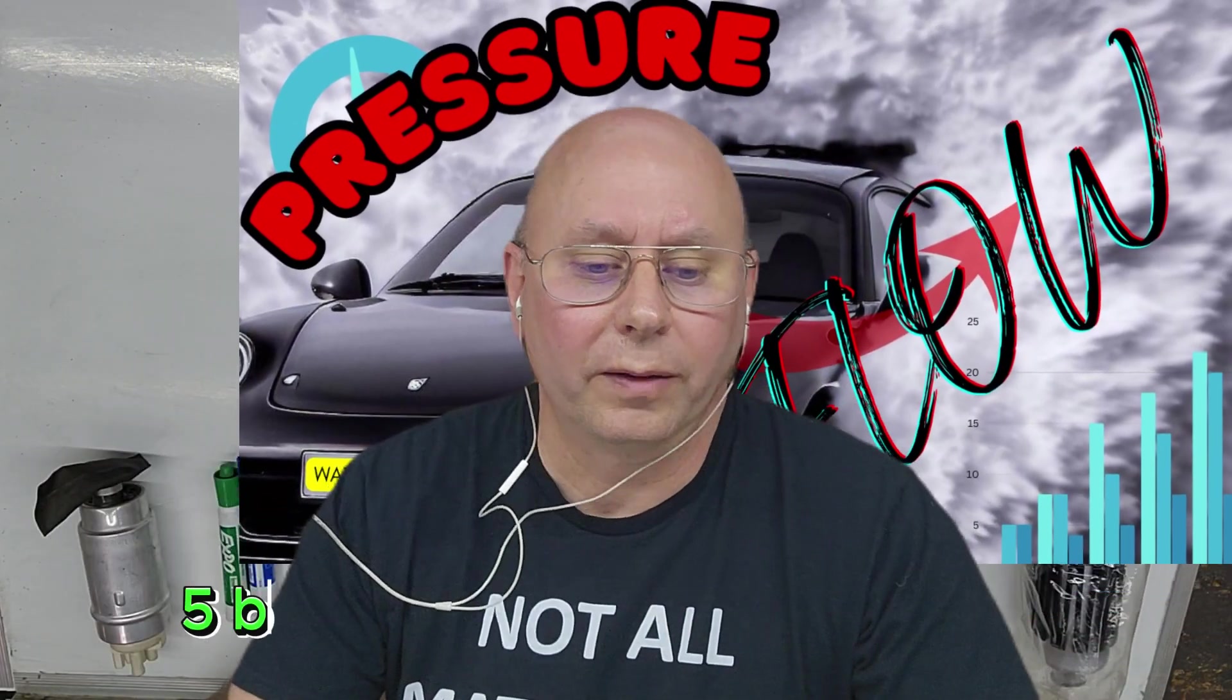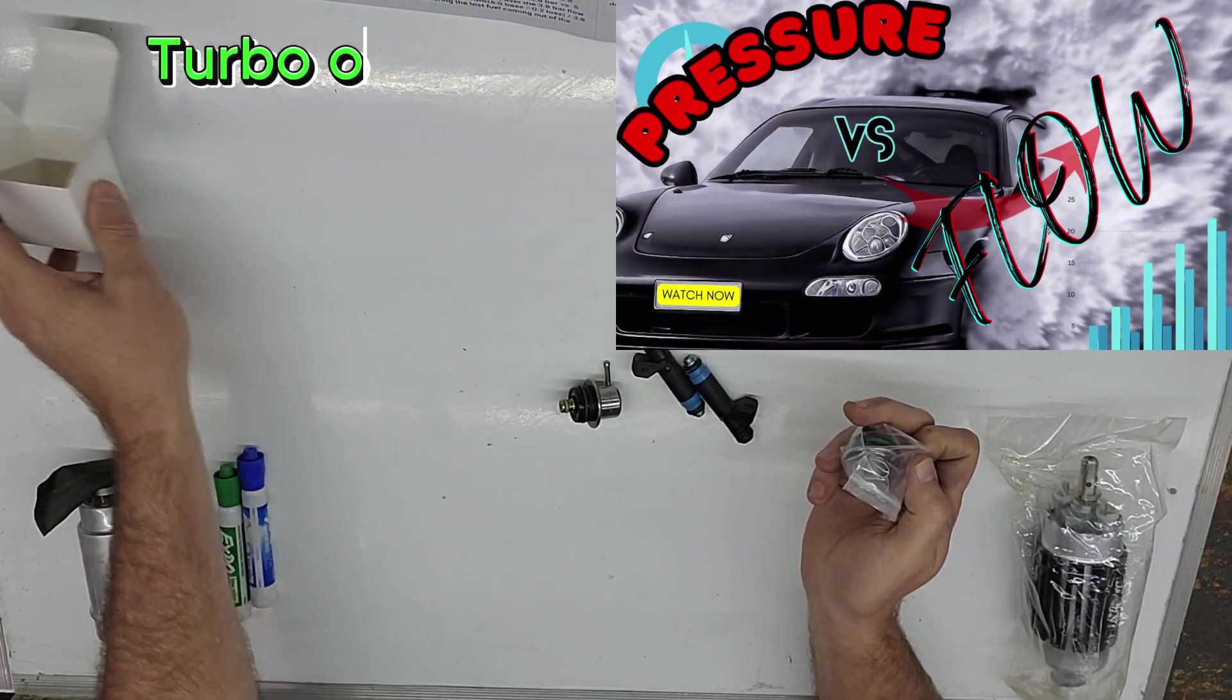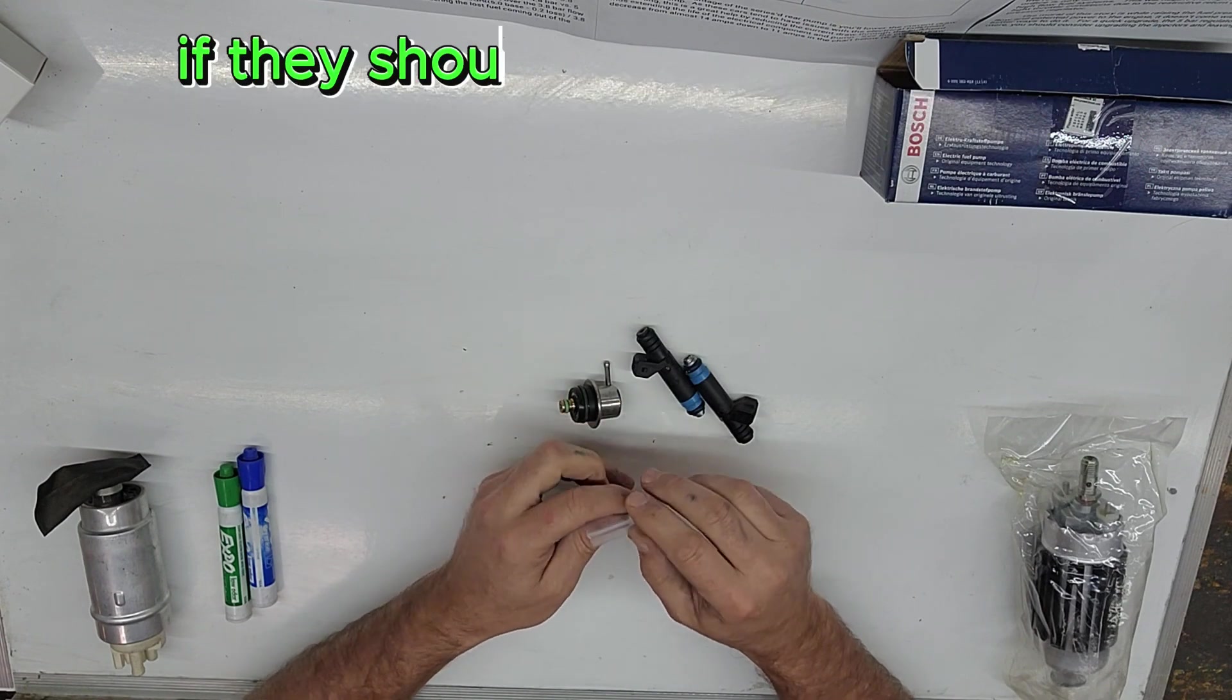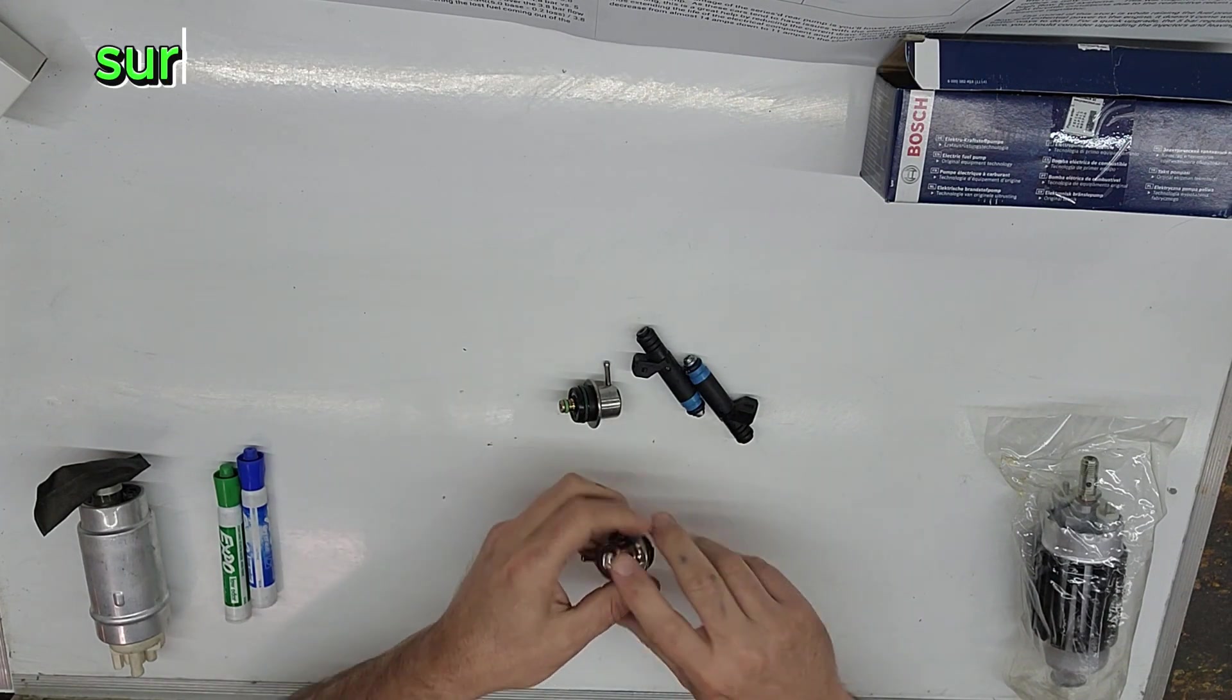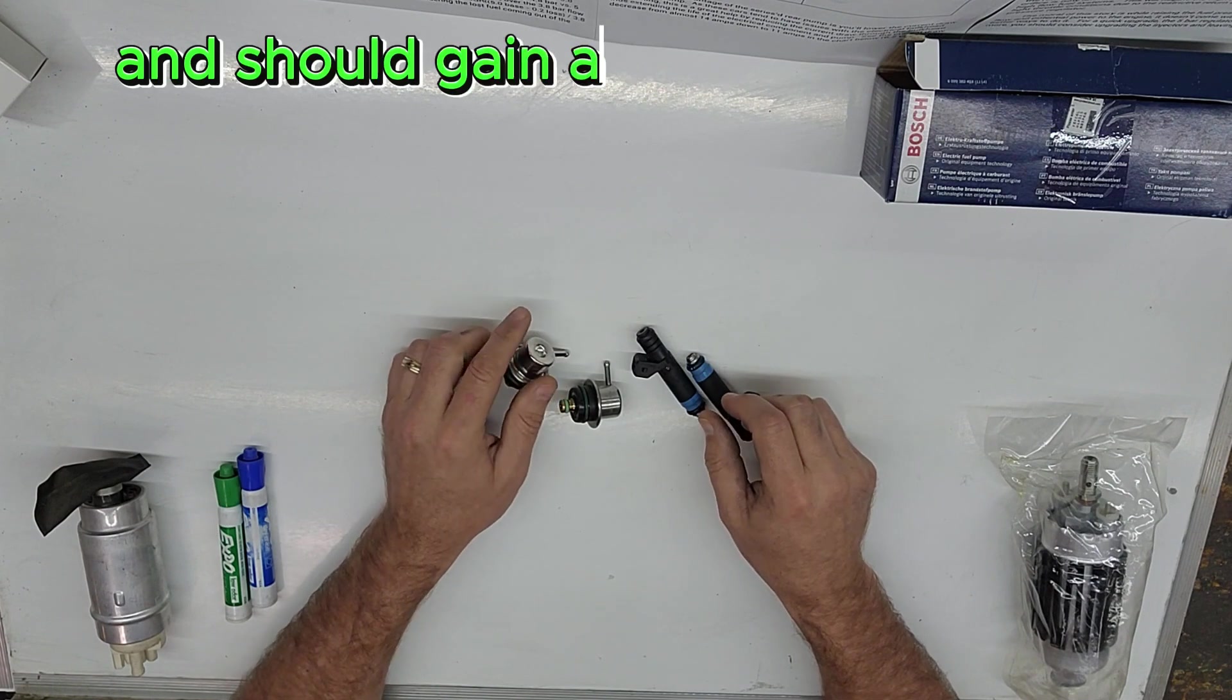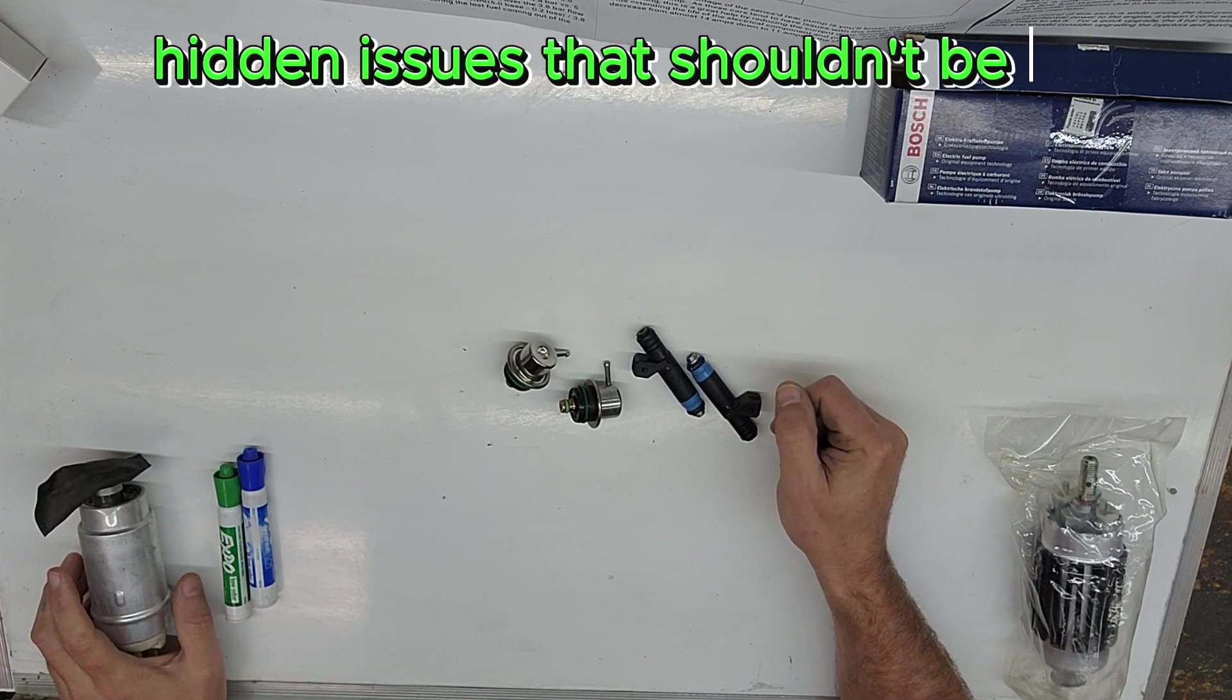Today we thought we'd talk to you about 5 bar fuel pressure regulators versus 60 and 80 pound fuel injectors. Turbo owners always want more power. 996 turbo owners have asked if they should run a 5 bar fuel pressure regulator versus upgrading to 60 or 80 pound fuel injectors. Sure, a 5 bar fuel pressure regulator is a quick drop-in and should gain about 15 percent in flow and power. But there's a few hidden issues that shouldn't be overlooked.